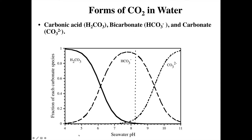In thinking about polyprotic acids, we often draw distribution diagrams. A distribution diagram has the fraction of each species on the y-axis, pH on the x-axis, and this shows the overall acid-base chemistry of the carbonate system. Carbonic acid is the dominant species under acidic conditions. As we increase pH to the first pKa, carbonic acid concentration decreases and bicarbonate concentration increases — they cross at the first pKa, and bicarbonate becomes the dominant intermediate form.